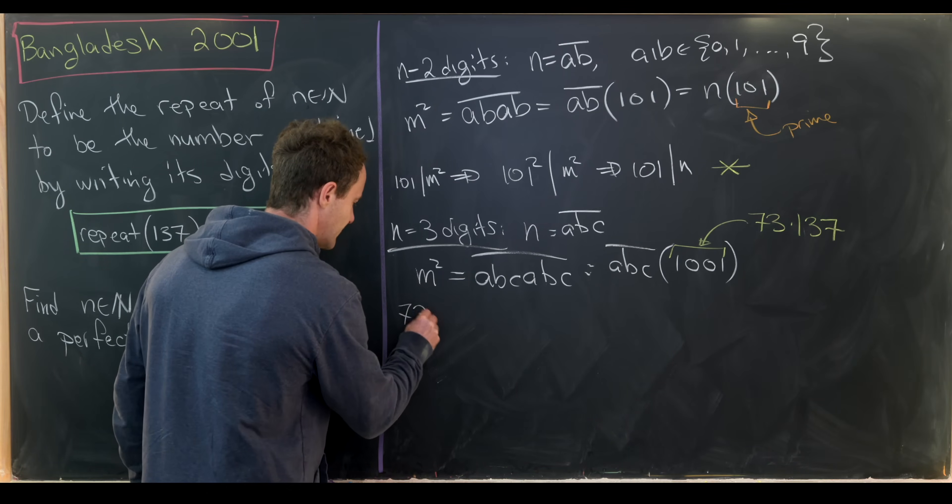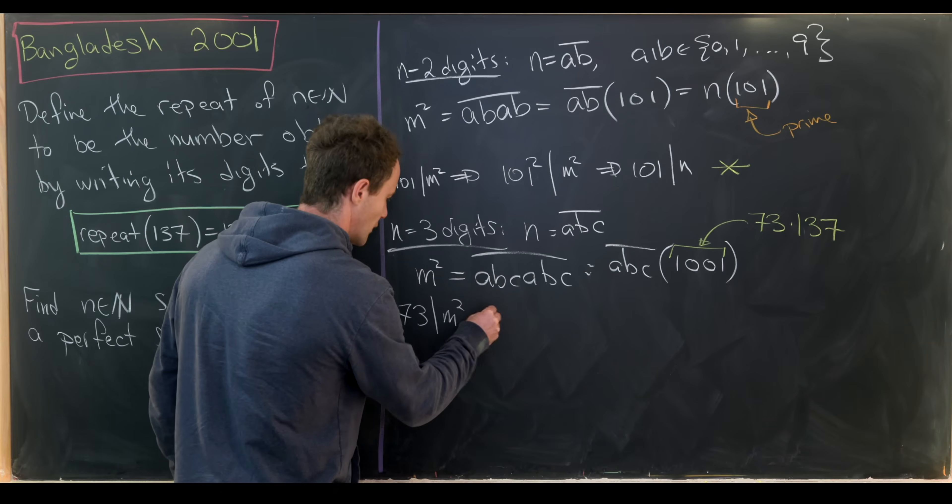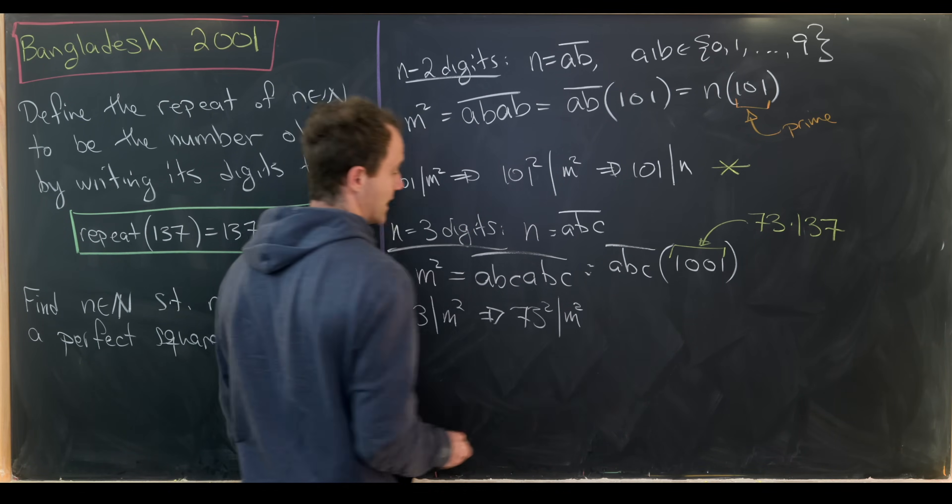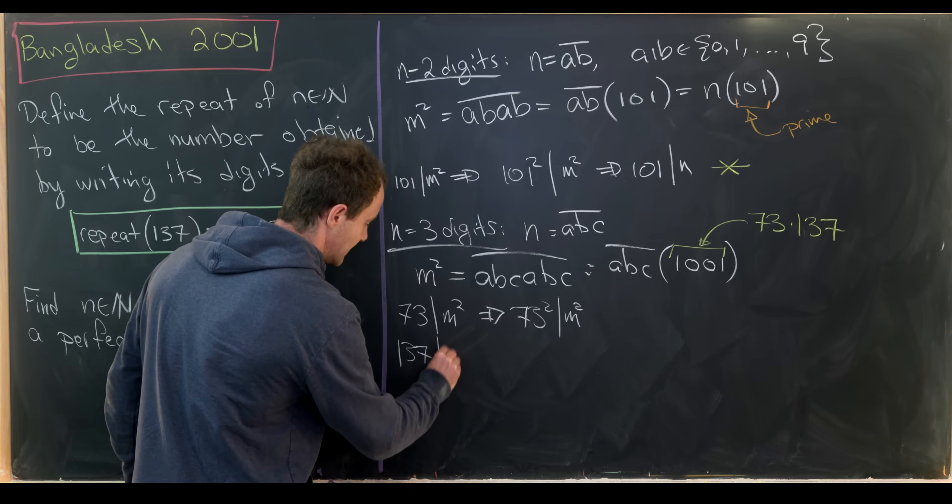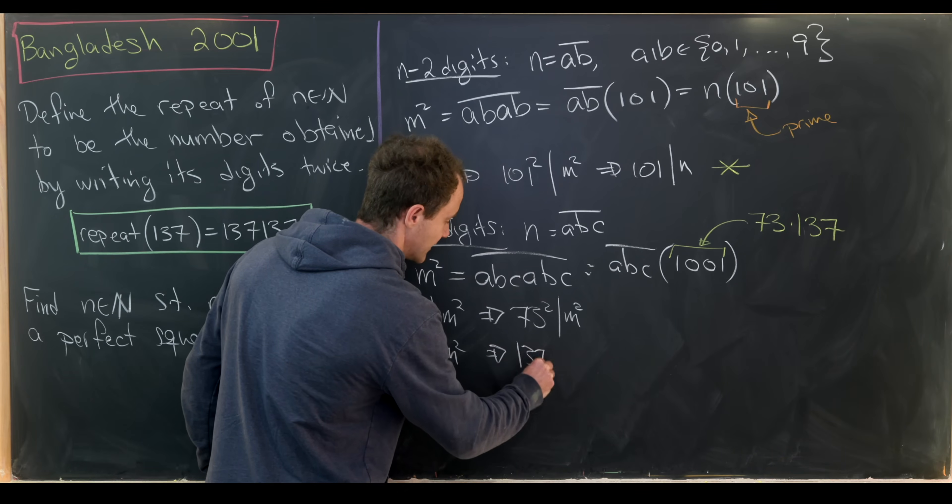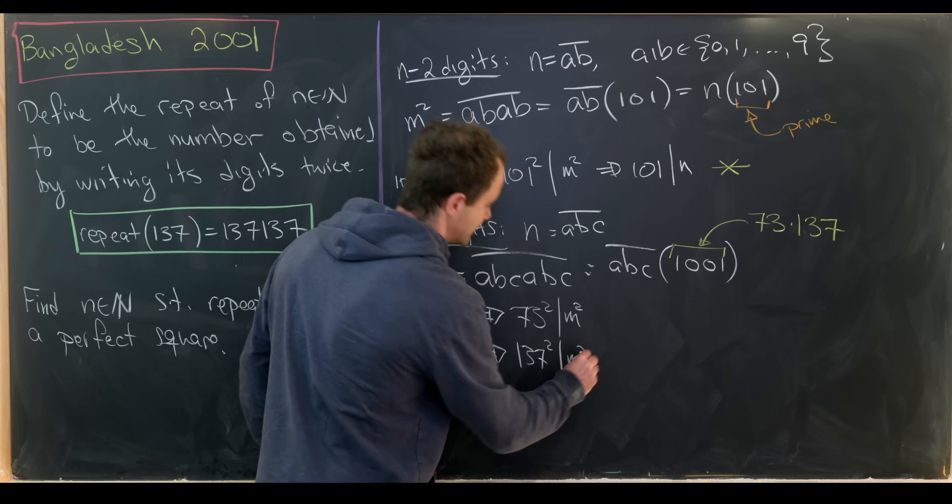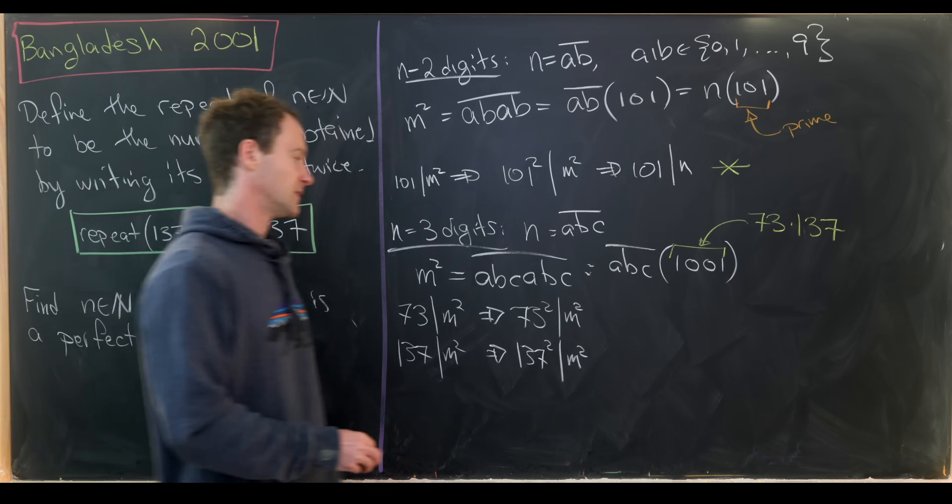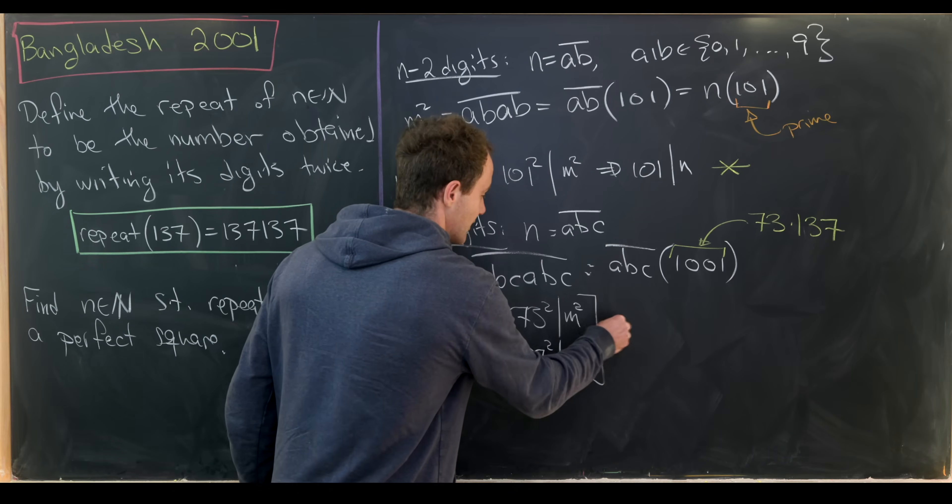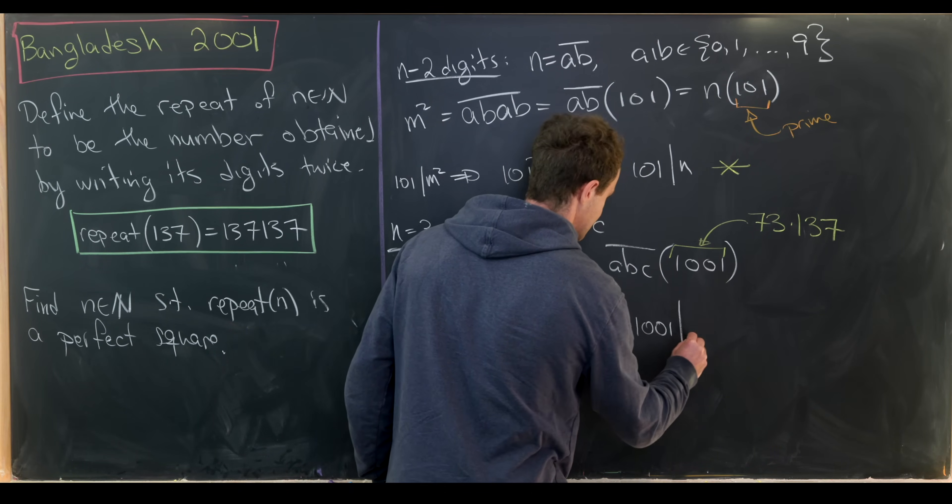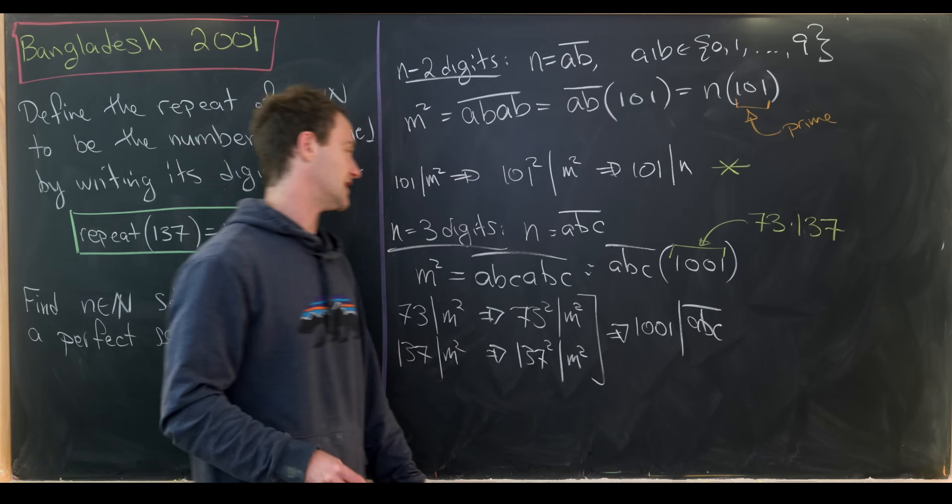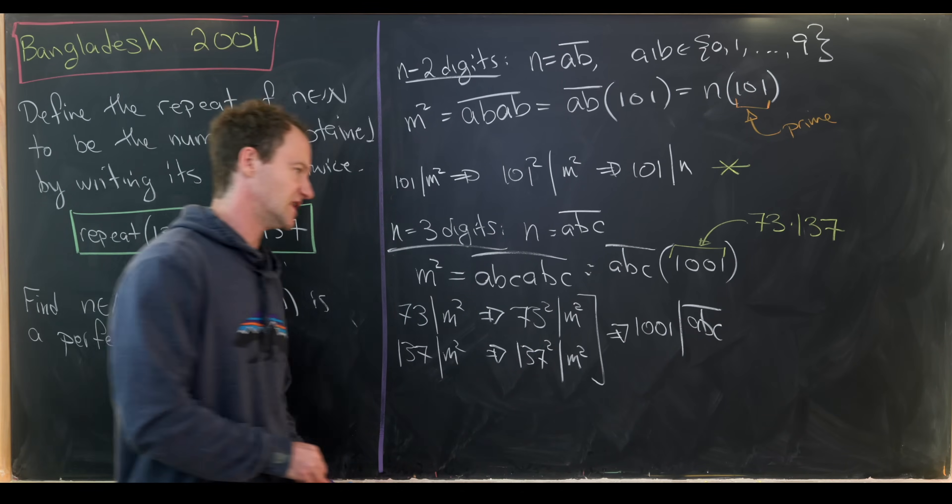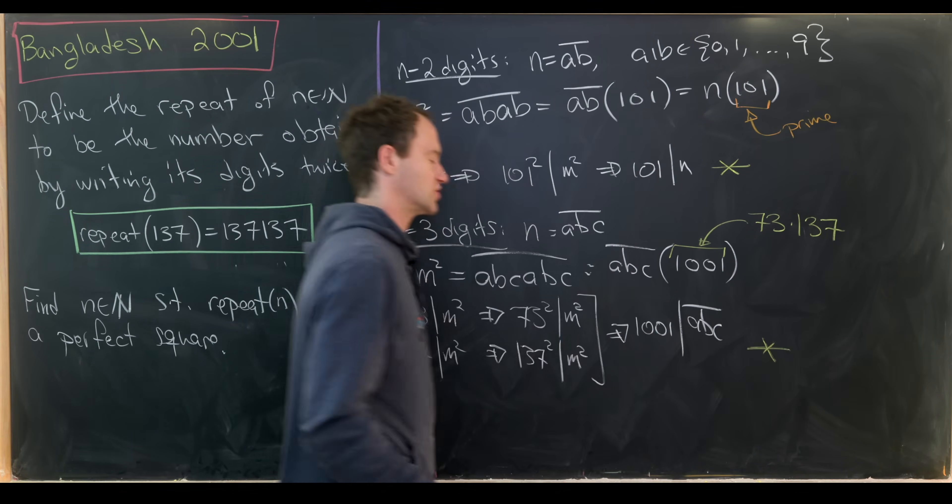So let's notice we have 73 divides m squared. That implies that 73 squared divides m squared. And then also 137 divides m squared means that 137 squared also divides m squared. Again, just because those are primes and they're dividing into squares. But these two things together tell us that 1001 must divide into abc, written as digits. In other words, the number n. But again, here we've got a four digit number dividing into a three digit number, which is a clear contradiction.